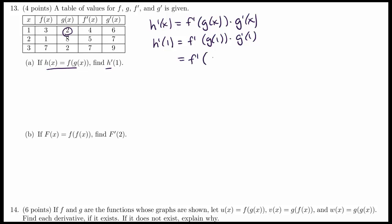G of 1 is 2 times G prime of 1 is 6. F prime of 2 is 5 times 6. This is equal to 30.